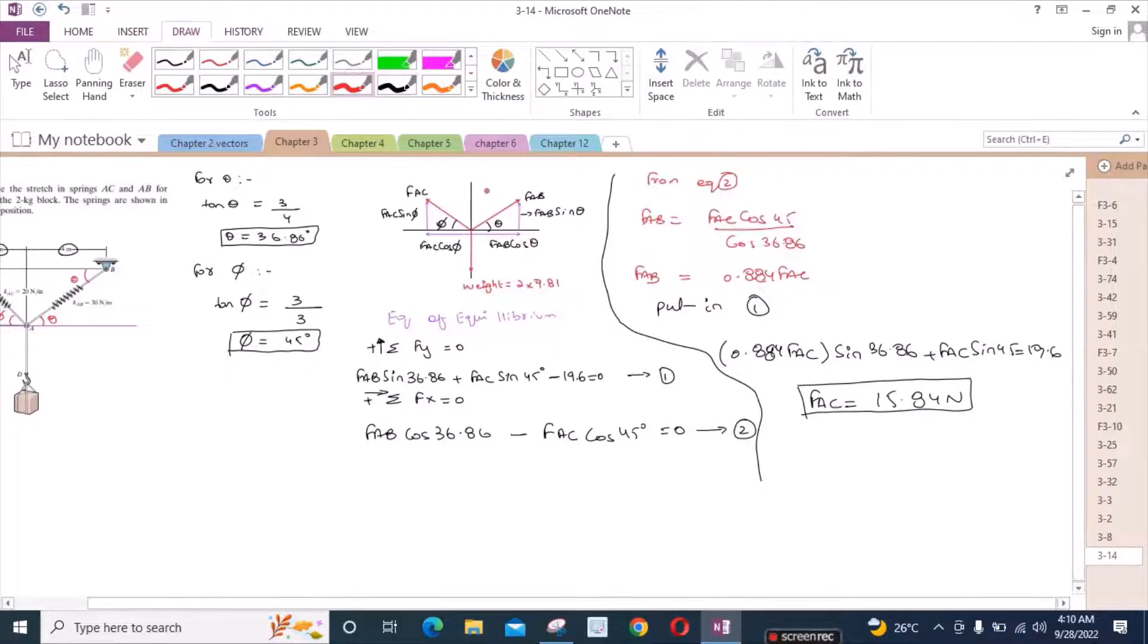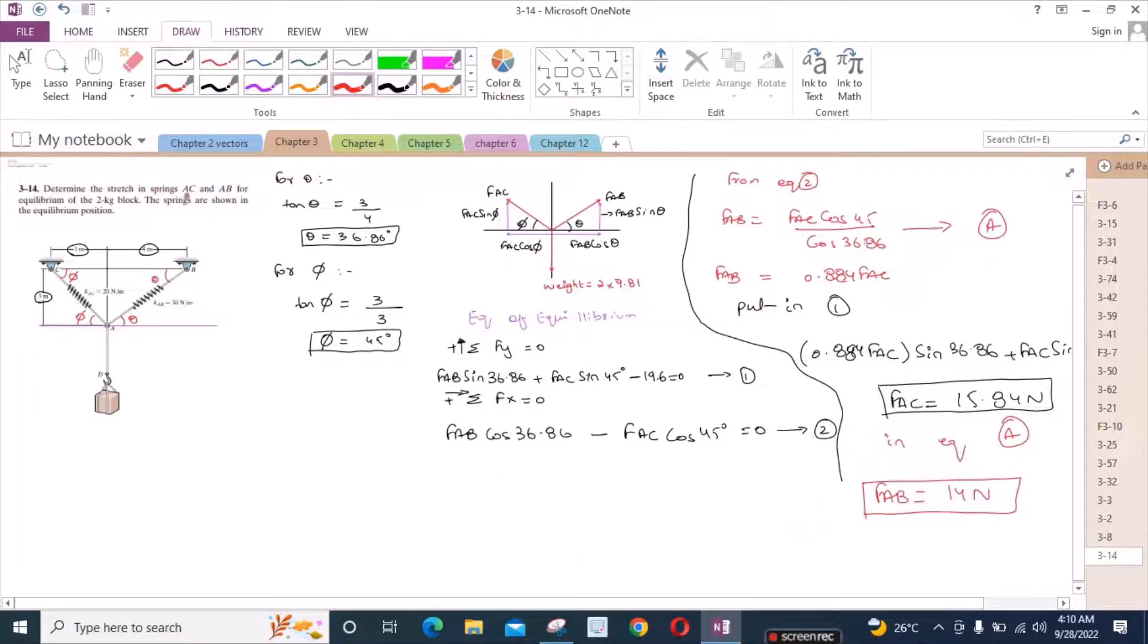Now if I put 15.84 newtons equal to FAC in equation A, then from here I have FAB is equal to 14 newtons. But what we had to find, we had to determine the stretch in the springs AC and AB.